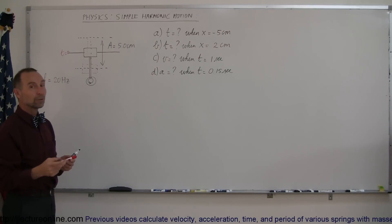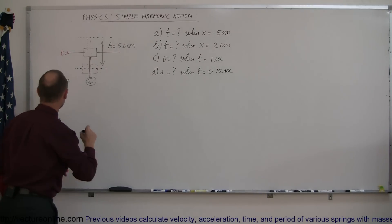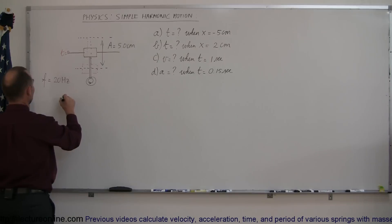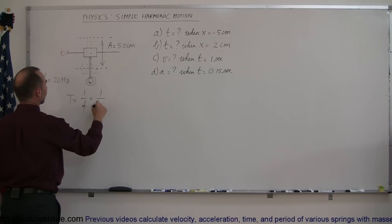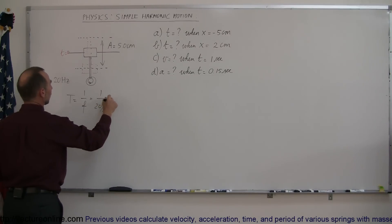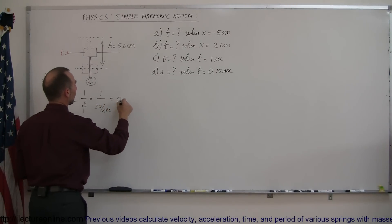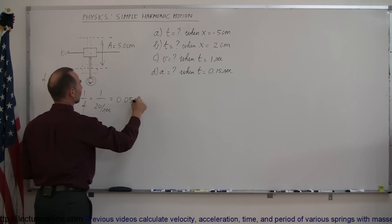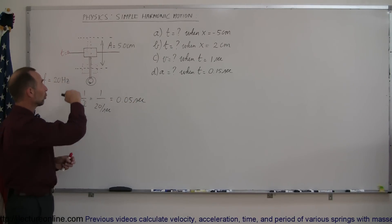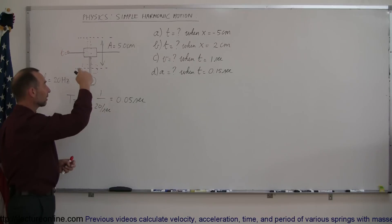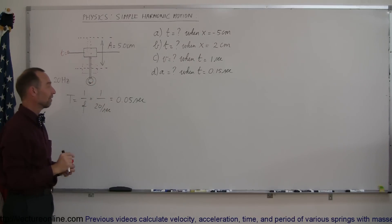We need to figure out the period first. If the frequency is 20 Hz, then the period is equal to 1 over the frequency — that's 1 over 20 per second — which equals 0.05 seconds. So one complete cycle of its motion takes 0.05 seconds.